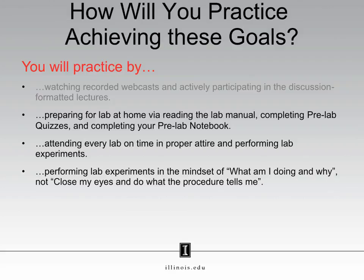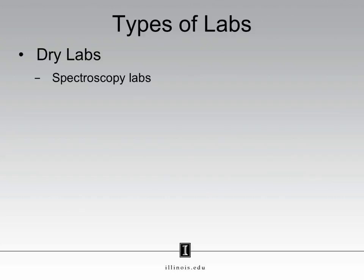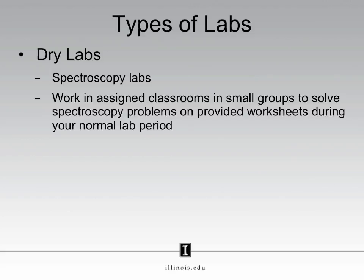How will you prepare for these labs? First, we must talk about what types of labs you will perform. The first type is what we call a dry lab. As you can see in the schedule in the course syllabus, the first three experiments are dry labs on spectroscopy. These dry labs will not be performed in your assigned laboratory room. Instead, they will be done in assigned classrooms working in small groups to solve spectroscopy problems provided in worksheets.